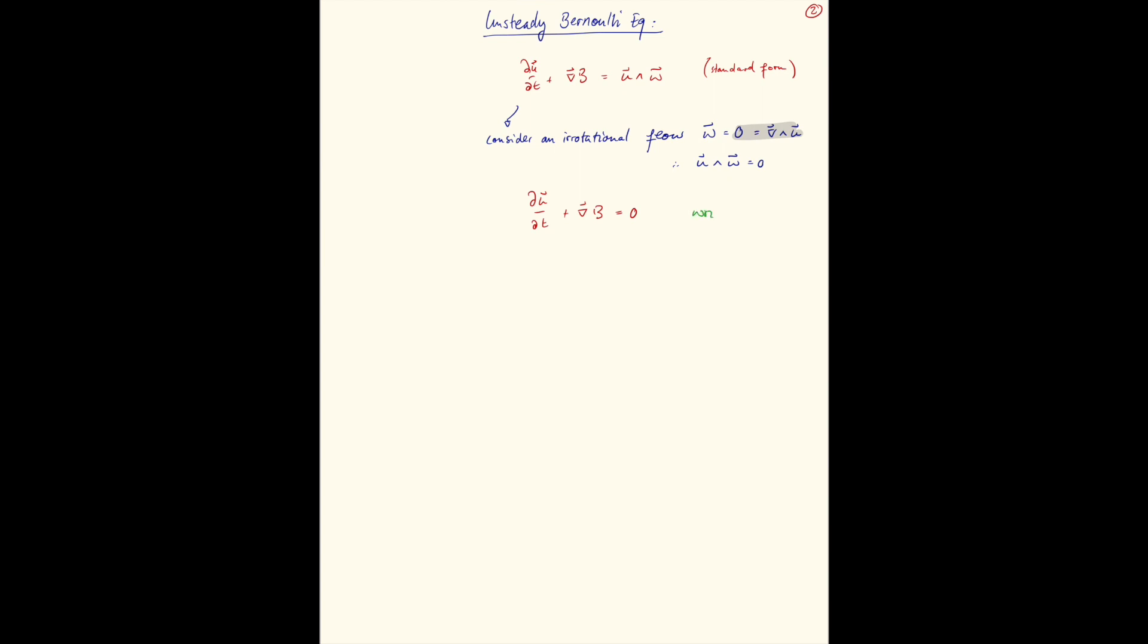Write u as gradient of a scalar, since the curl of the gradient of a function, scalar function phi, is zero. And then, we can just write our Bernoulli equation as the gradient of d phi dt plus b equals zero.